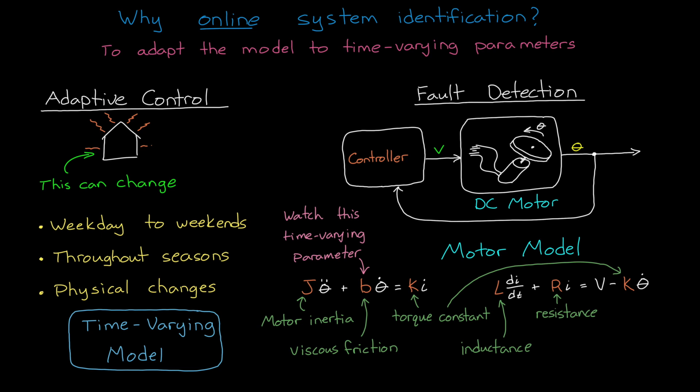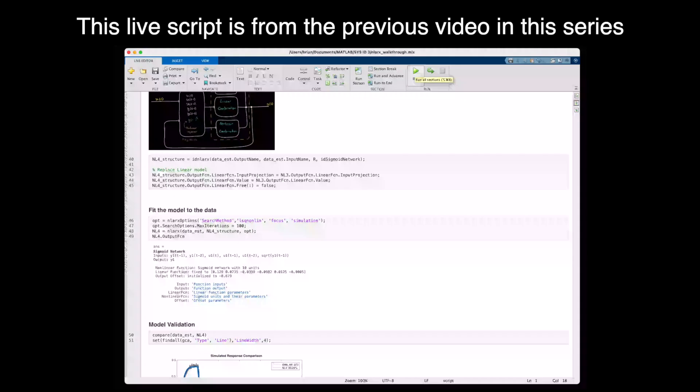If your system is slow enough, like some chemical processes, then collecting a bunch of data once a day and running offline identification is probably sufficient. But for fast changing systems, we need online algorithms.